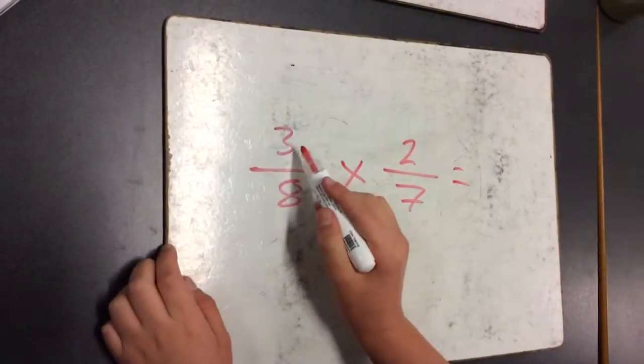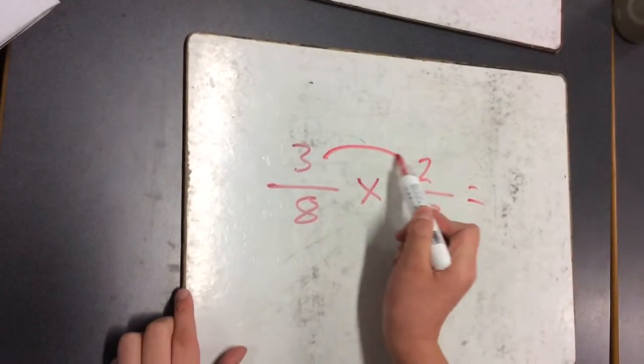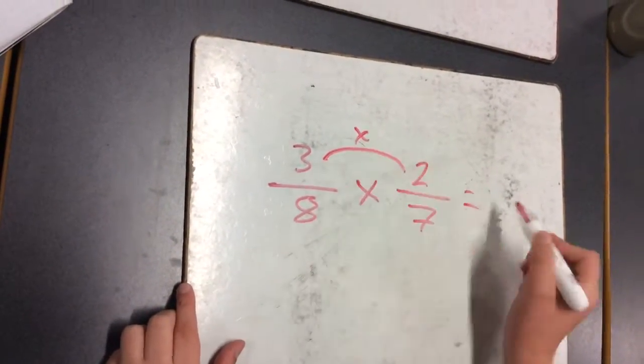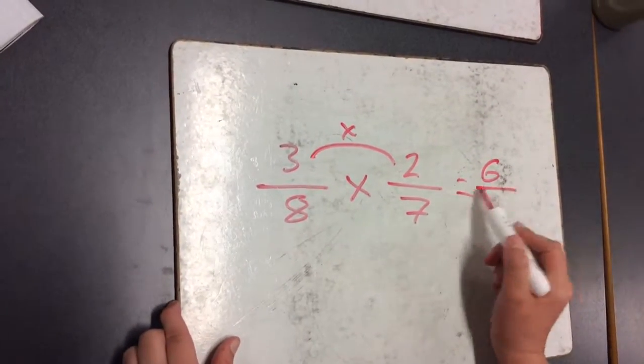You just times the numerator by the other numerator. In this case, 3 times 2, which is 6. So that is our new numerator and we do our line.